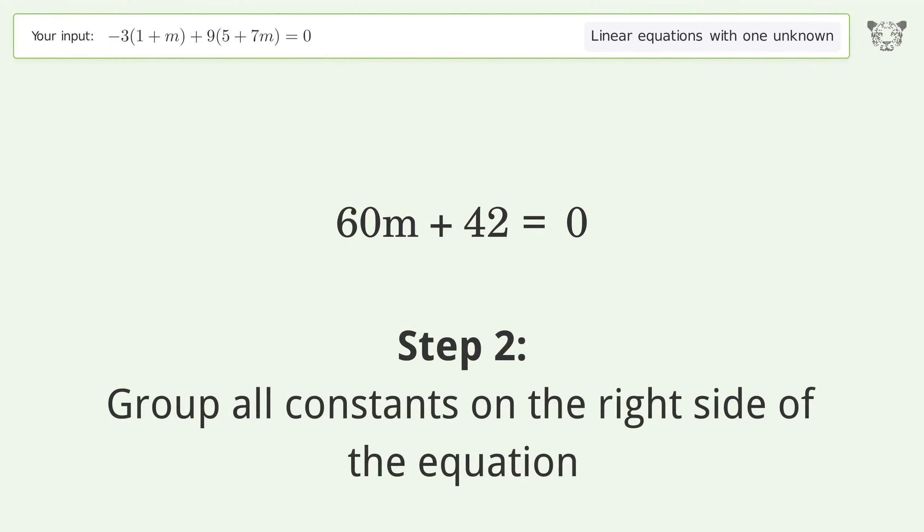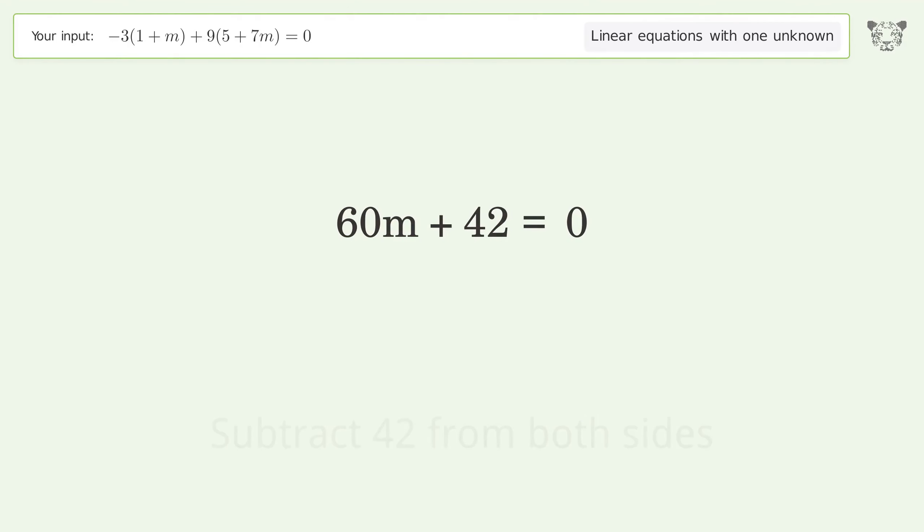Group all constants on the right side of the equation. Subtract 42 from both sides and simplify the arithmetic.